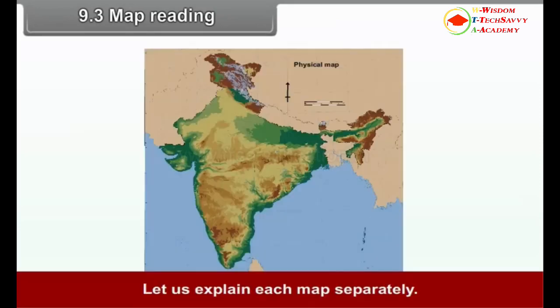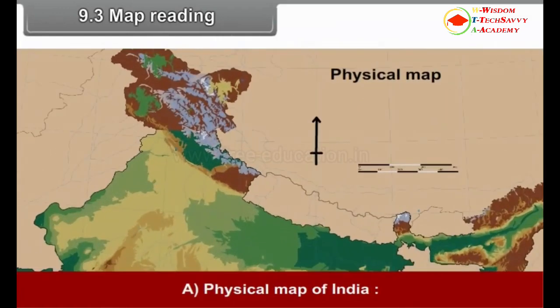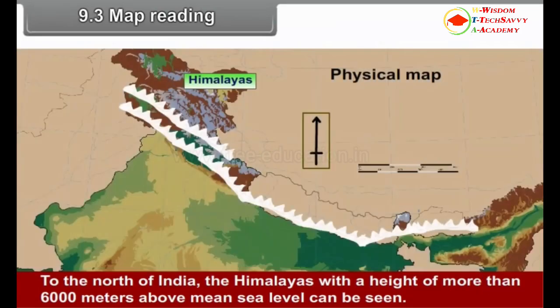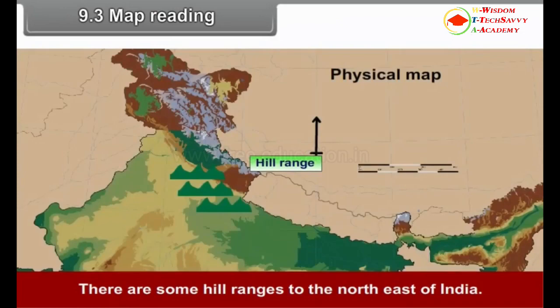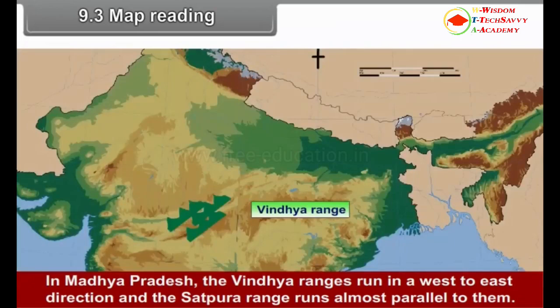9.3 Map Reading. Let us explain the Physical Map of India. To the north of India, the Himalayas with a height of more than 6,000 meters above mean sea level can be seen. There are some hill ranges to the north-east of India. The Aravalli range lies in the west of India in Rajasthan. In Madhya Pradesh, the Vindhya ranges run in a west-to-east direction and the Satpura range runs almost parallel to them.